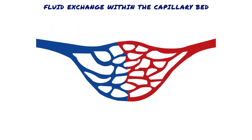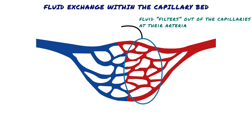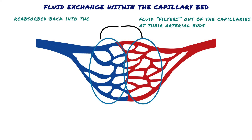The average capillary pressure at the arterial ends of the capillaries is 15–25 mmHg greater than at the venous ends. Because of this difference, fluid filters out of the capillaries at their arterial ends, but at their venous ends fluid is reabsorbed back into the capillaries. Thus, a small amount of fluid actually flows through the tissues from the arterial ends of the capillaries to the venous ends.